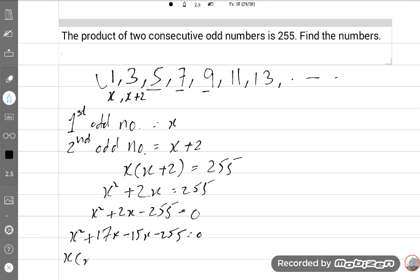Now we will take common. Minus 15 is common, x plus 17. X minus 15 is equal to 0 and x plus 17 is equal to 0.